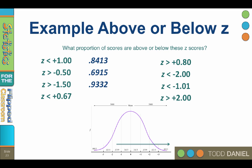What proportion of scores are below a positive 0.67? 0.7486.